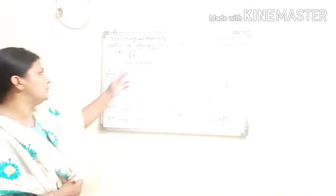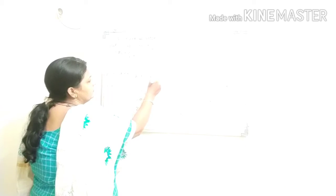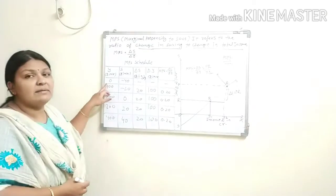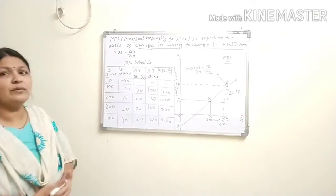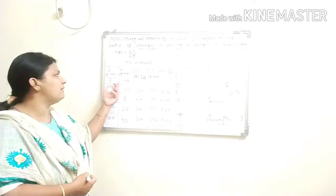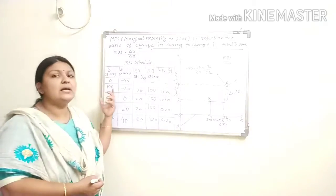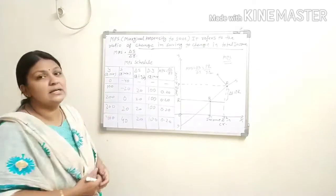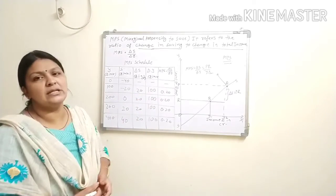Here a schedule is given. The MPS schedule has income in rupees in crores, saving in rupees in crores — same measurement throughout. When the income level is 0, your saving is minus 40. We have already seen the saving function: S equals function of Y. When income is 0 and saving is minus 40, this represents dis-saving. Since there is no previous data, there is no change in delta S or delta Y, so no MPS can be calculated.